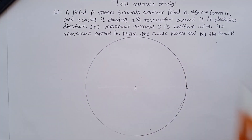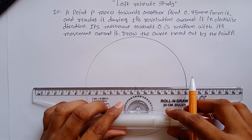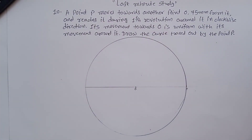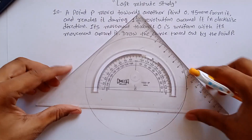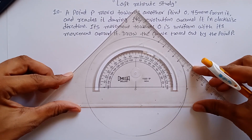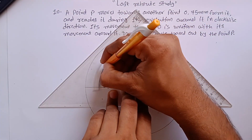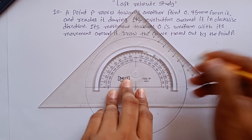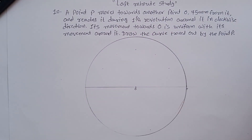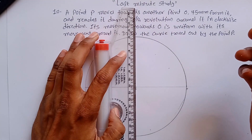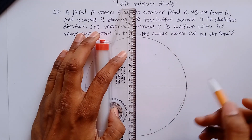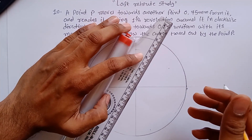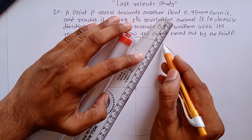Once you finish constructing this circle, divide it into 12 equal parts using the same method used in previous problems. To do so: 30, 60, 90, again 60 and 30 — you can divide this into six or eight equal parts, but I insist on dividing it into 12 equal parts for better construction of the curve. Otherwise you get fewer intermediate points to construct the curve.